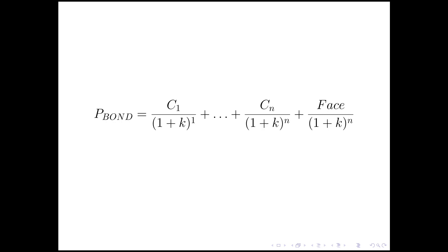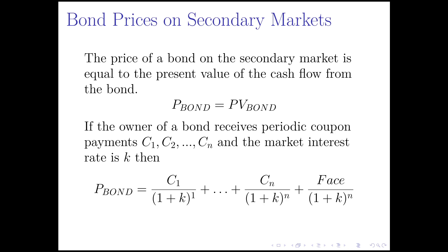Let's talk about the relationship between the price of a bond and interest rates, the coupon rates, and its face value. The main idea is that the price of a bond on the secondary market — so after it was initially issued — is going to be equal to the present value of the cash flow from the bond.